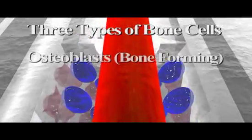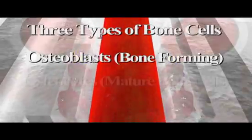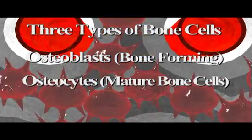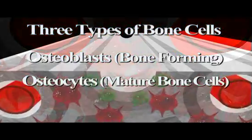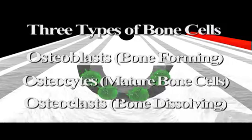There are three types of bone cells: osteoblasts, bone forming cells; osteocytes, mature bone cells; and osteoclasts, bone dissolving cells.